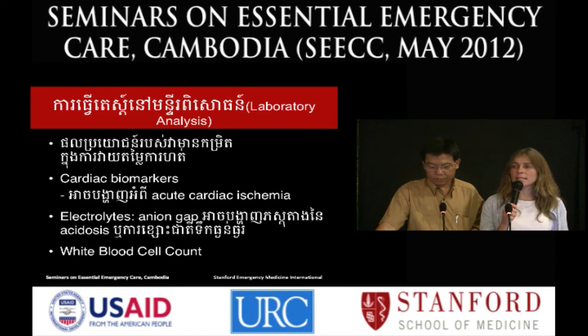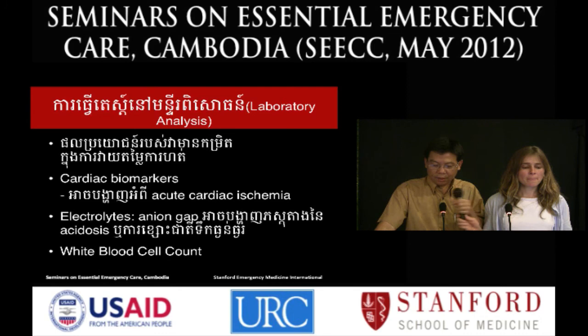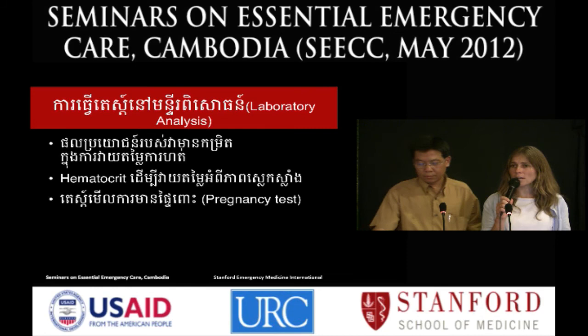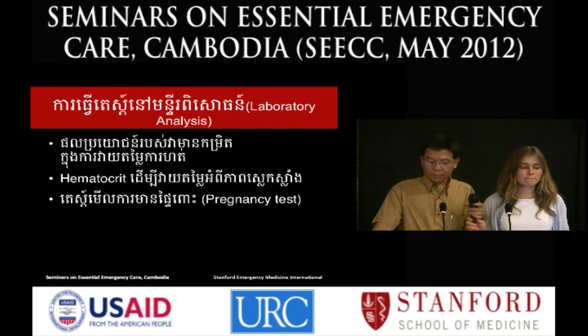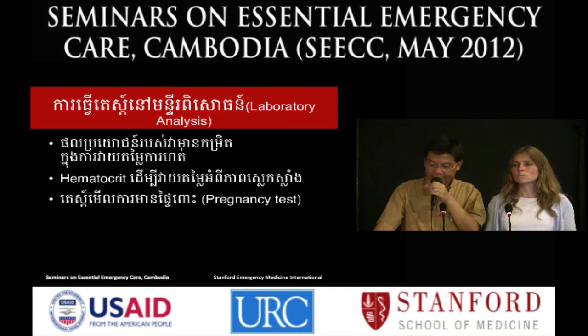Cardiac markers are useful for a heart attack. Electrolytes help determine if a patient is acidotic, such as in diabetic ketoacidosis. A white blood cell count will be high in infection such as pneumonia. For anemia — blood loss — hemoglobin and hematocrit are easy blood tests to check. It's also important to check whether the patient is pregnant.